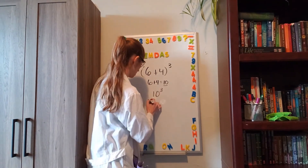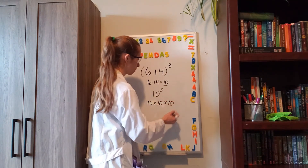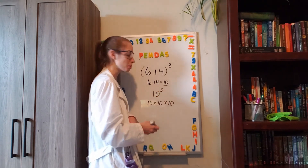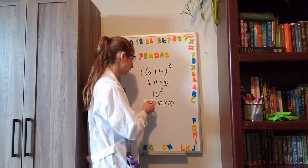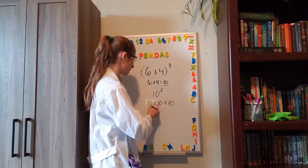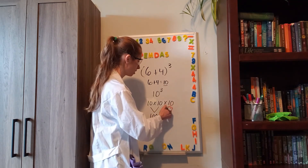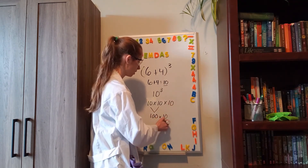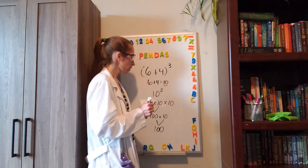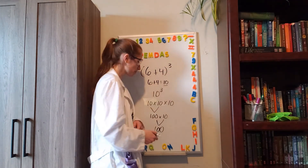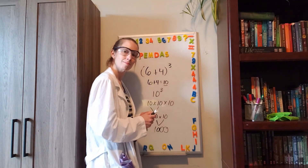And 10 cubed is easy to solve. I know that's 10 times itself three times. Remember, our exponent tells us how many times to multiply our base. So 10 times 10 times 10. Well, 10 times 10 equals 100, and 100 times that third 10 — 100 times 10 gives us 1,000. So there's your answer: 6 plus 4 cubed equals 1,000. Glad I could help.